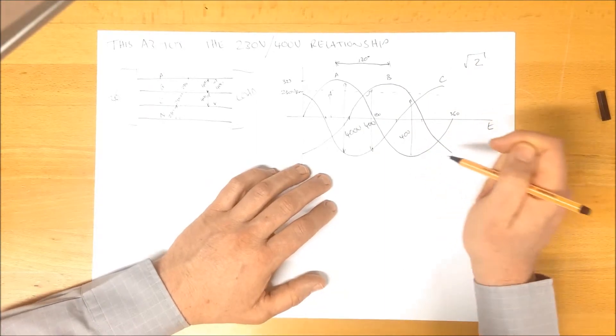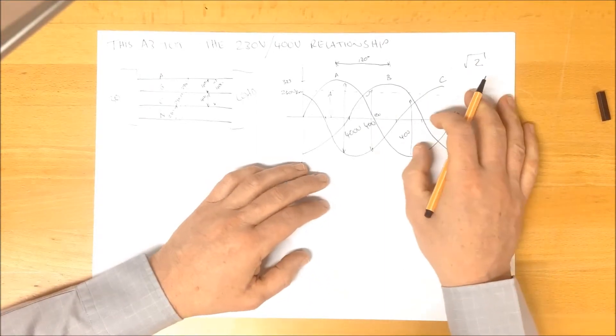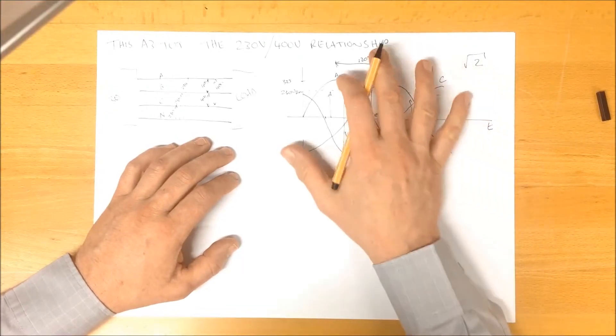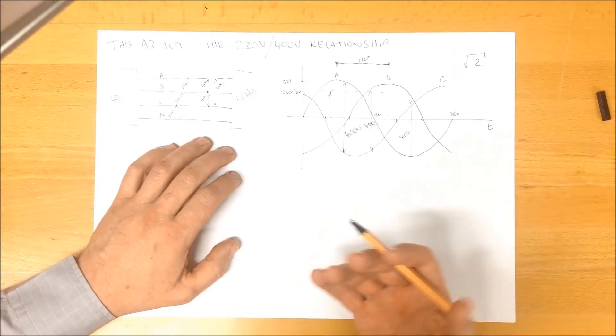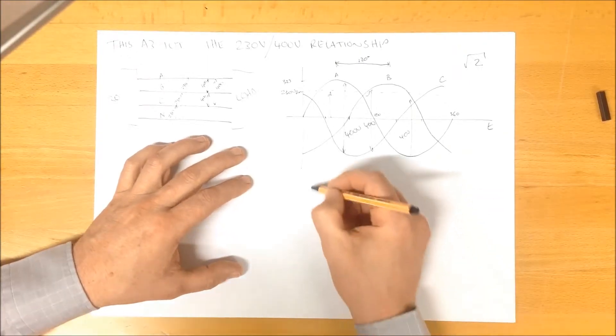Some people perhaps are not convinced by that, even though it's perfectly true. So what we can also do is we can take the time domain and we can show it in the phasor or the vector domain. And this gives perhaps a clearer understanding of what's going on.